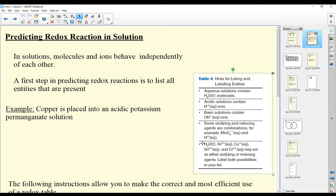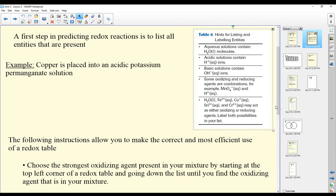Table six on the right here outlines two hints for listing and labeling entities. Aqueous solutions contain H2O molecules. Acidic solutions contain H+ ions, basic solutions contain OH- ions. Some oxidizing and reducing agents are combinations, for example MnO4- and H+. Aqueous H2O liquid, Fe2+, Cu+, Sn2+, and Cr2+ may act as either oxidizing or reducing agents. Label both possibilities in your list.